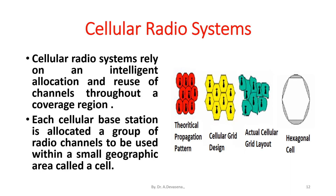Cellular radio systems rely on an intelligent allocation and reuse of channels throughout a coverage region. Each cellular base station is allocated a group of radio channels to be used within a small geographic area called a cell. In this diagram we are seeing the theoretical propagation pattern, cellular grid design, the actual cellular grid layout, as well as the hexagonal cell representation.